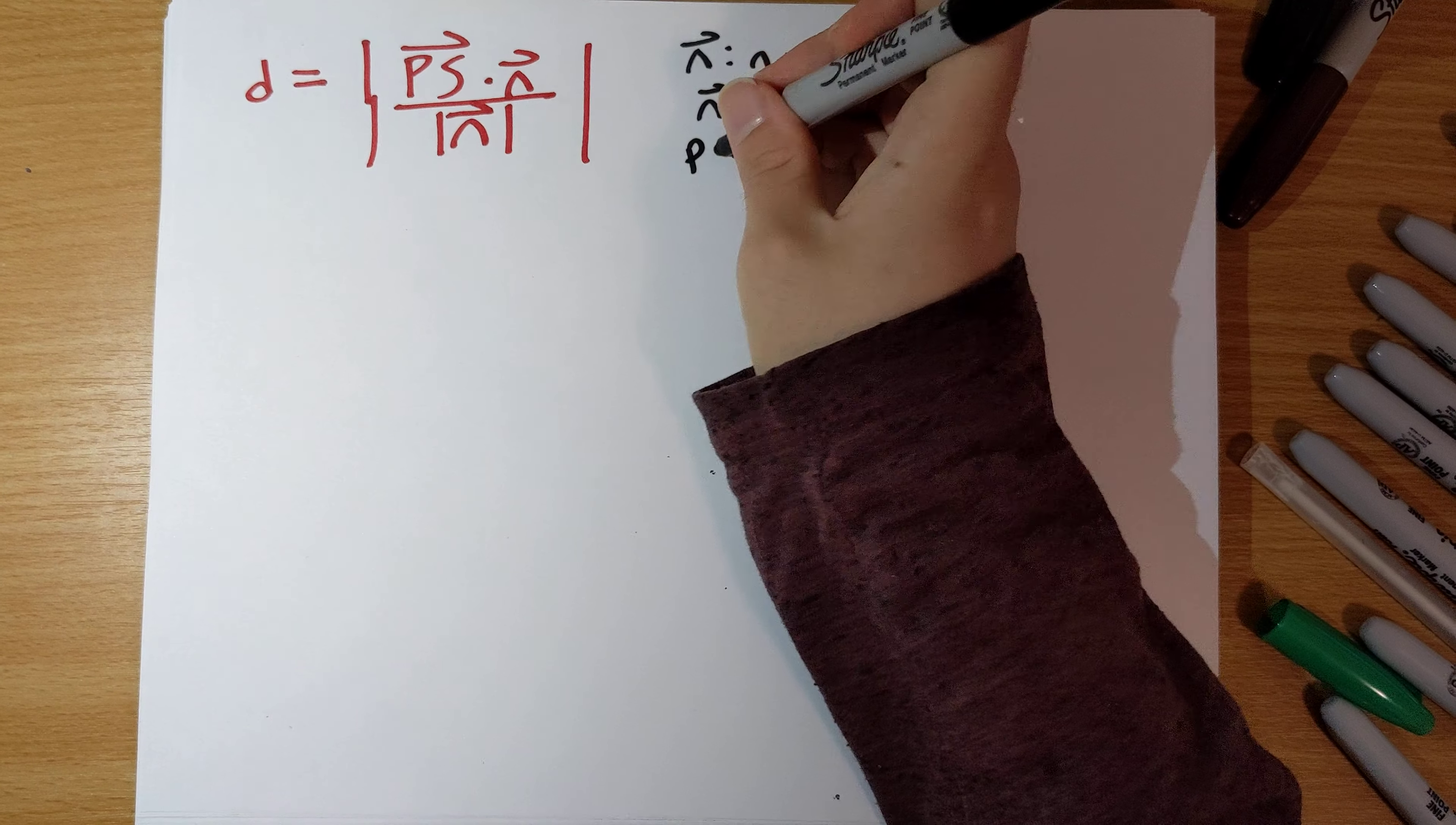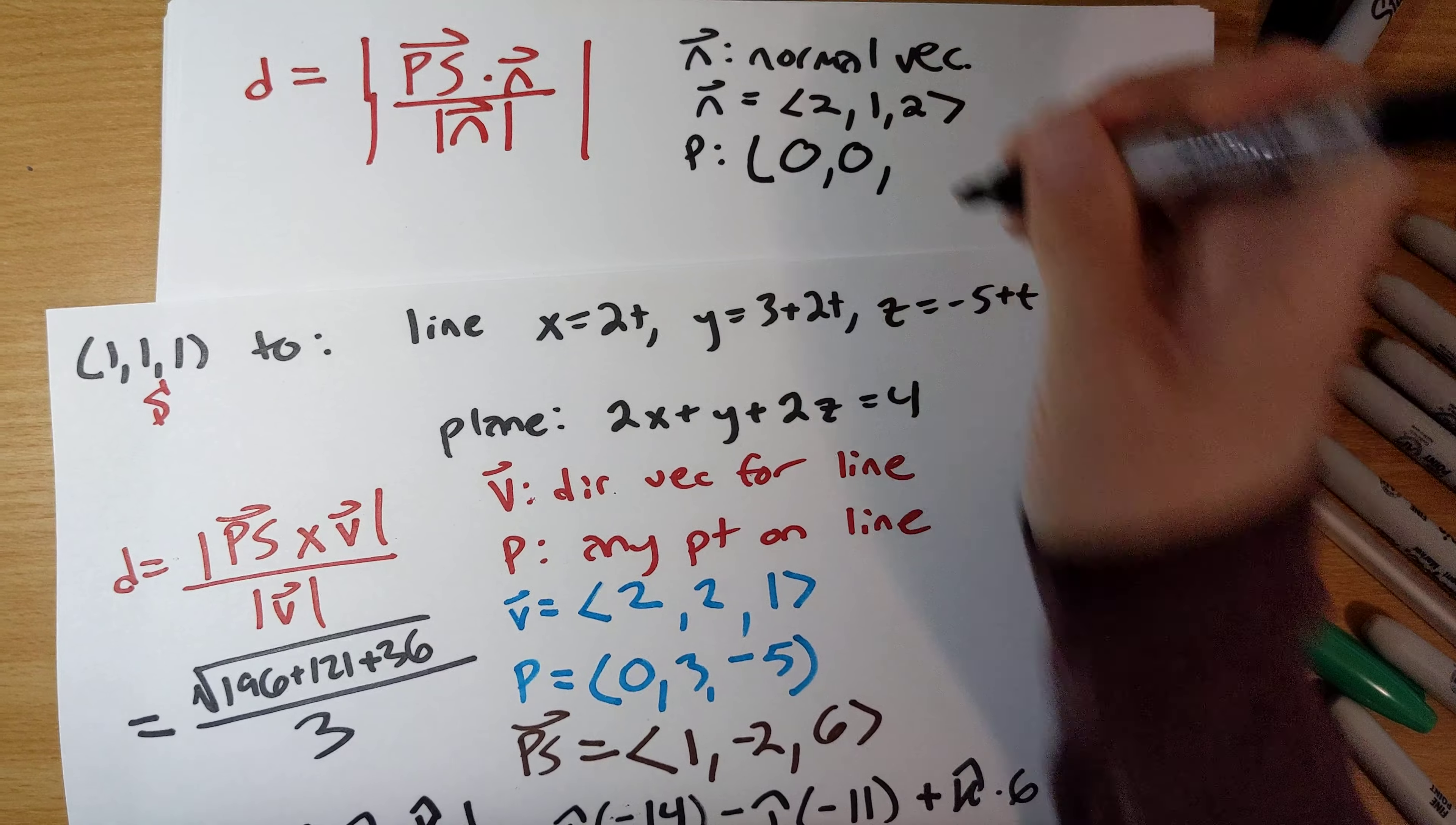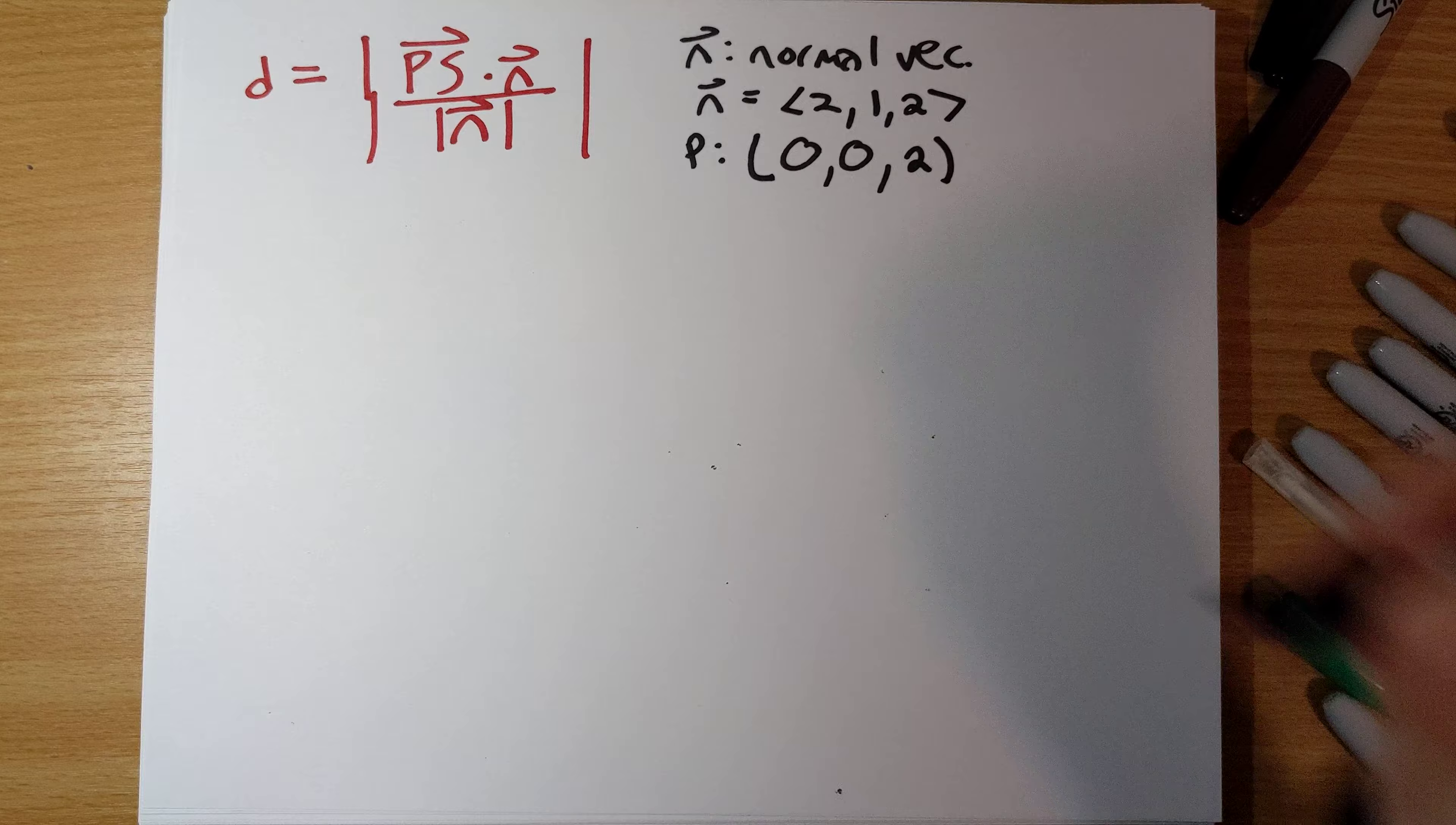P can be any point on the plane. I'm just going to plug in, if I make x and y both 0, if I make x and y both 0, 2z is equal to 4, that is z equals 2. You could have picked many other points on the plane. I just had to pick one.